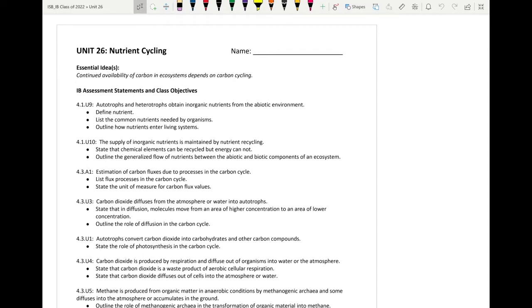Unit 26 for ISB students is the start of nutrient cycling. In this unit we're going to look at how carbon is cycled throughout the atmosphere but also looking at more wider aspects of the earth.